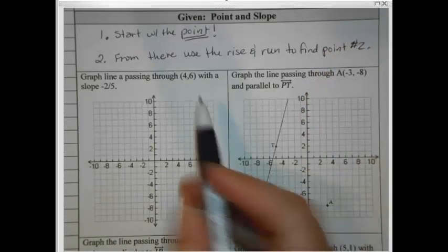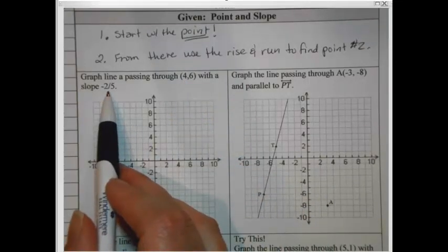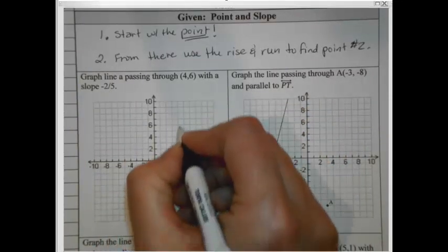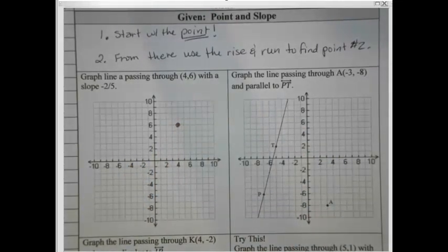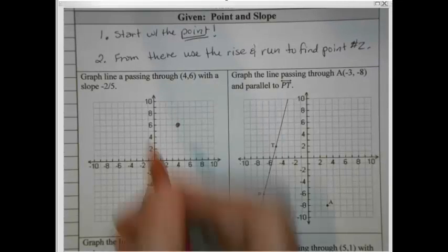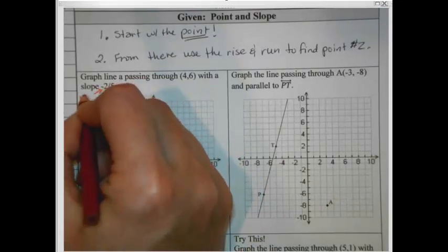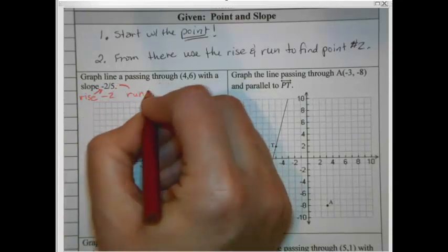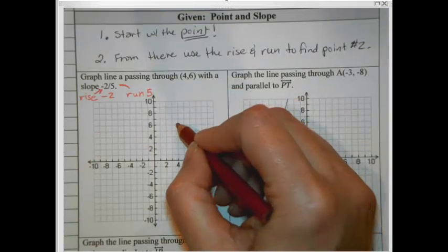Here's our first example. We're going to graph the line that runs through the point 4, 6 with a slope of negative 2 fifths. My first step is to start by plotting the point. So let's go to 4, 6 and get that plotted. And then I go from there with my rise and the run. Now let's look at what the rise and the run are. The rise is from the y's. It's here on the top. So I'm going to rise negative 2. I'm going to run from the numerator, or the denominator, I'm going to run 5.